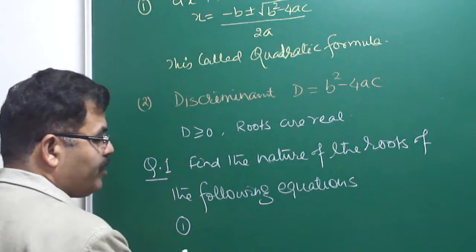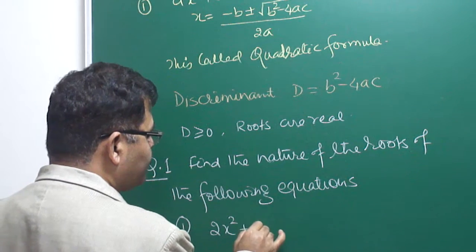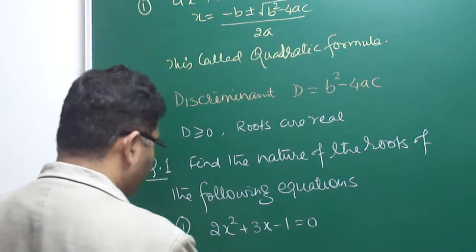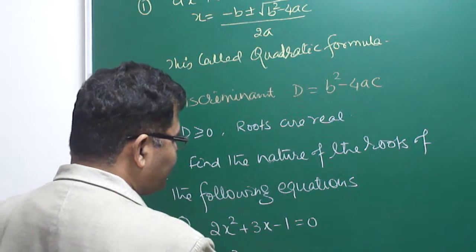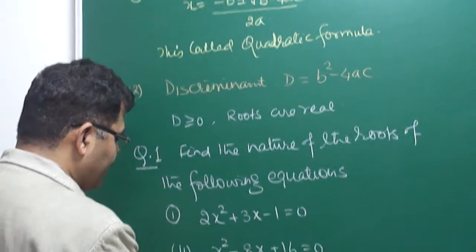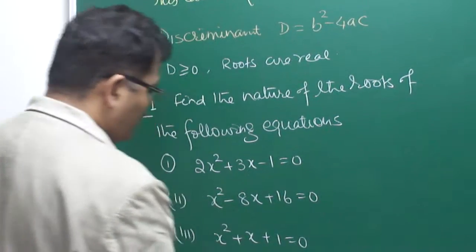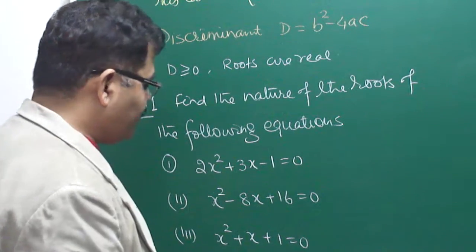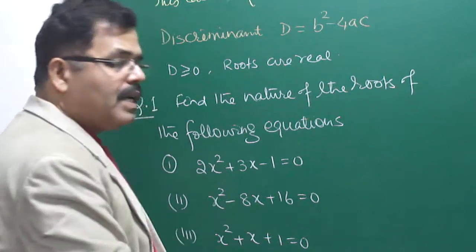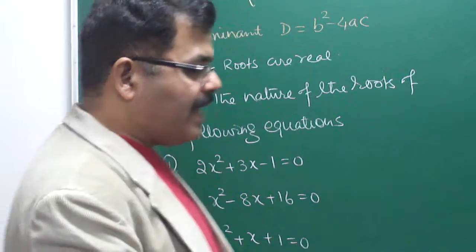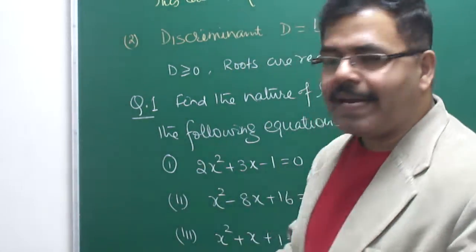Here are a few equations. The first is 2x squared plus 3x minus 1 equals zero. The second is x squared minus 8x plus 16 equals zero. The third is x squared plus x plus 1 equals zero. These are three questions I am going to consider here — all written from my own knowledge of the subject.